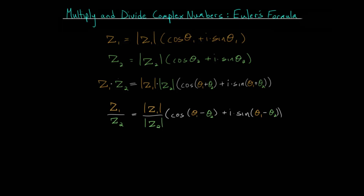When we multiply two complex numbers in polar form, we multiply their magnitudes — their distance from the origin — and we add their angles. Likewise, for division, we divide their magnitudes and we subtract the angle of the denominator from the angle of the numerator.